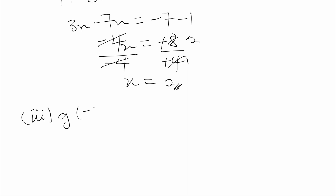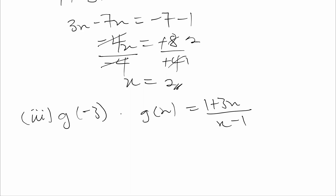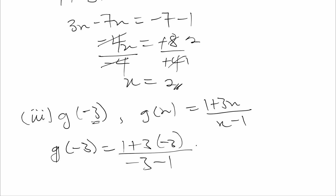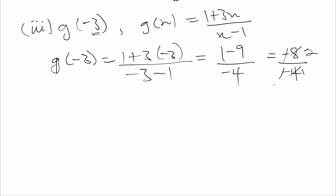For part (iii), we find g(-3). We know g(x) = (1 + 3x) / (x - 1). Anywhere we see x, we put negative 3. So g(-3) = (1 + 3(-3)) / (-3 - 1) = (1 - 9) / (-4) = (-8) / (-4). The negatives cancel, and 4 goes into 8 twice. Therefore g(-3) = 2.